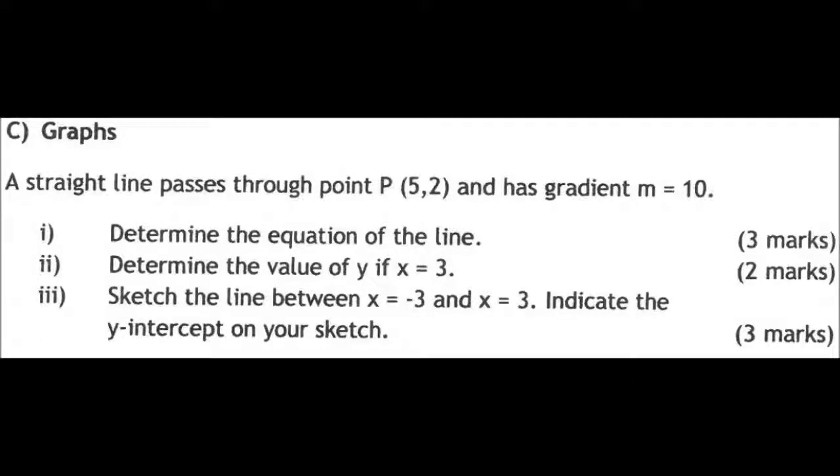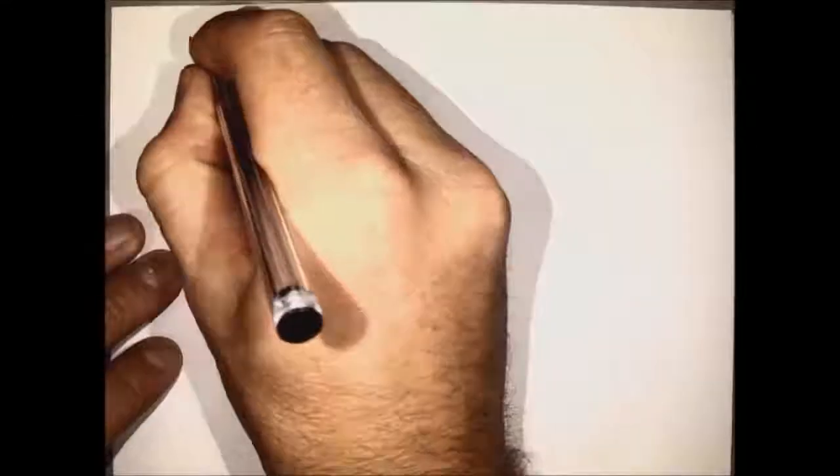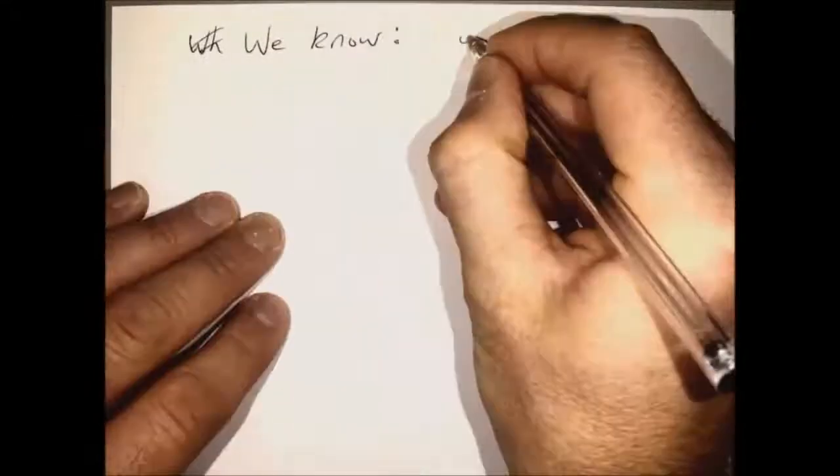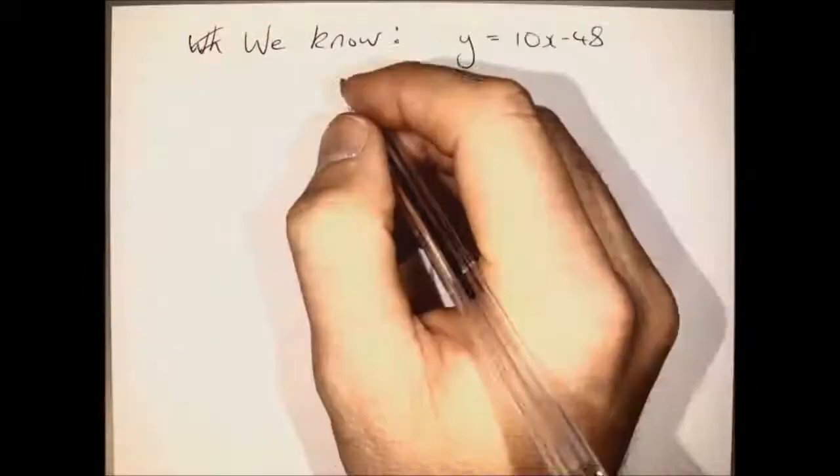Part 3, sketch the line between x equals minus 3 and x equals 3. So you can imagine these as two vertical lines. And what do we know? We know the equation of the line.